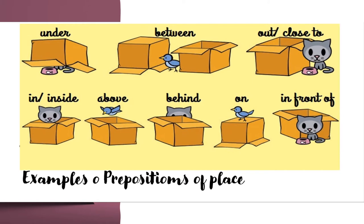Close to — the cat is close to the box. We can also use 'next to'. In and inside — the cat is in or inside the box. Above — the bird is above the box.